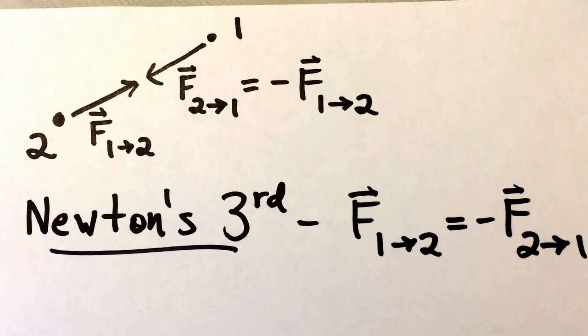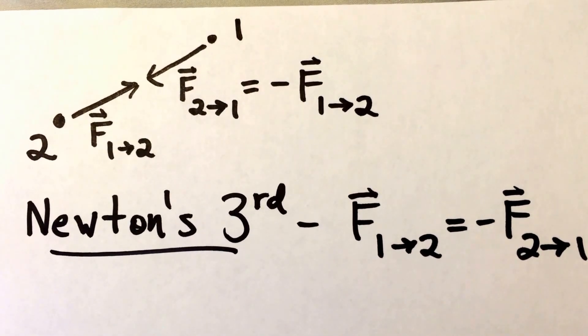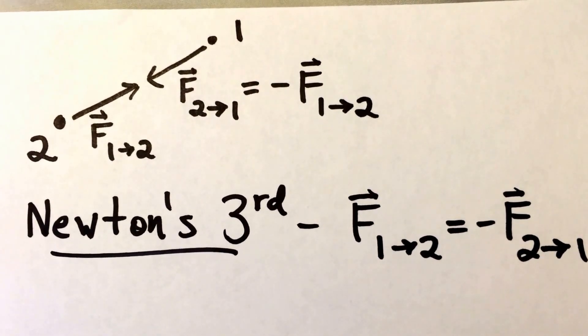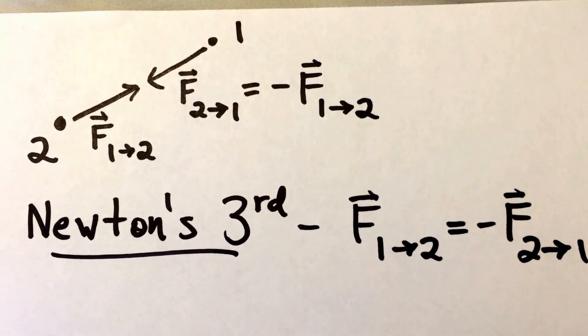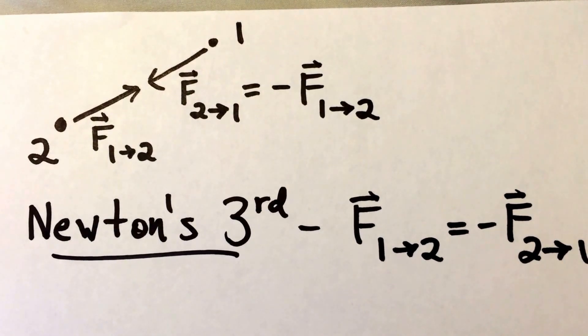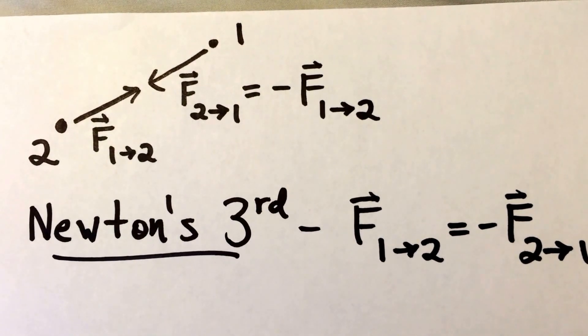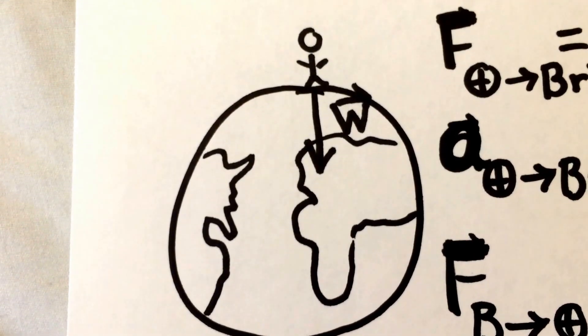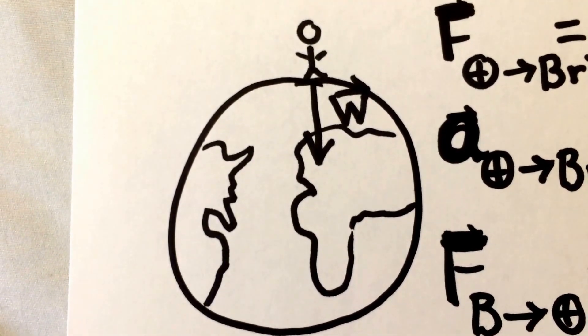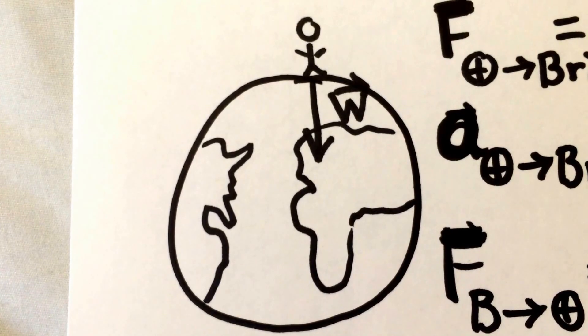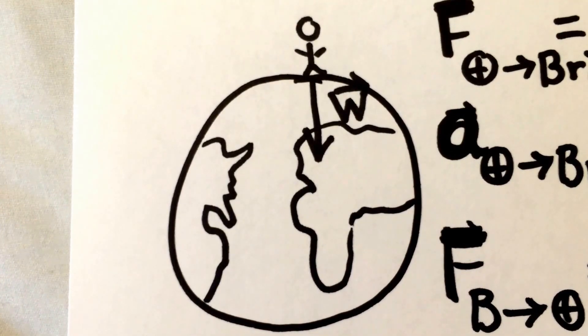This law turns out to be intimately connected to the conservation of momentum for a closed system. A good example of a closed system is me standing on the Earth.